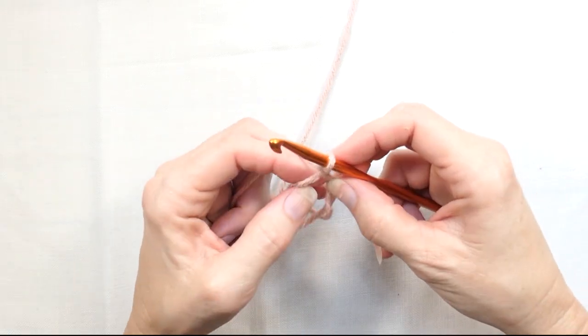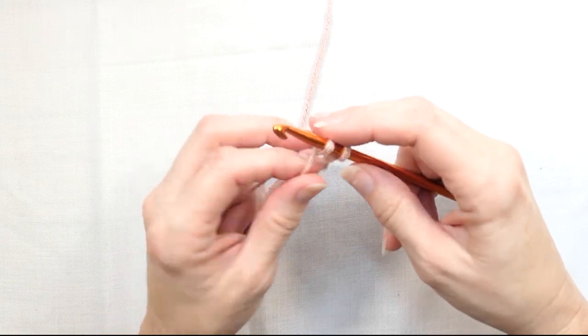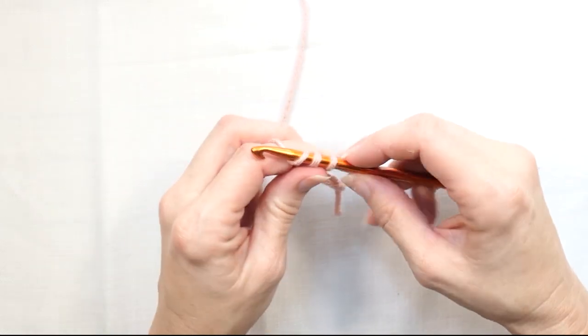And so here I'm just going to make a couple, or probably a few, single crochets around this ring so you can see what this looks like.